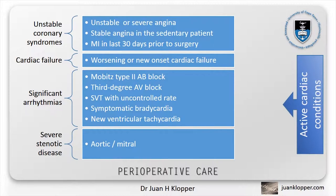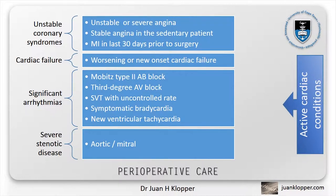In step 2 of the algorithm, we consider active cardiac conditions. These include unstable coronary syndromes such as unstable or severe angina, stable angina in the sedentary patient, and myocardial infarctions in the last 30 days prior to the planned surgery. It also includes worsening or new onset heart failure at the time of the procedural evaluation, significant arrhythmias such as high-grade AV block, Mobitz type 2 AV block, third-degree AV block, symptomatic ventricular arrhythmias, supraventricular arrhythmias with an uncontrolled rate, symptomatic bradycardia, and newly recognized ventricular tachycardia. Finally, it also includes those with severe stenotic valvular disease such as severe aortic stenosis and symptomatic mitral stenosis. It is therefore important to examine your patients and listen to their heart sounds when you consider them for surgery.